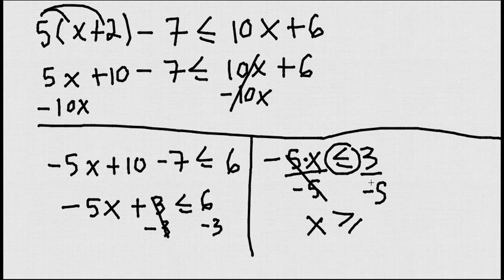x is greater or equal. Now, 3 over negative 5 is negative 3 over 5. Remember, 3 over negative 5 is the same as negative 3 over 5. We always put the negative to the top, and voila.